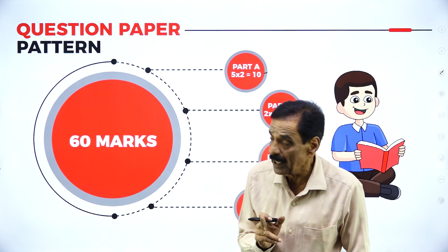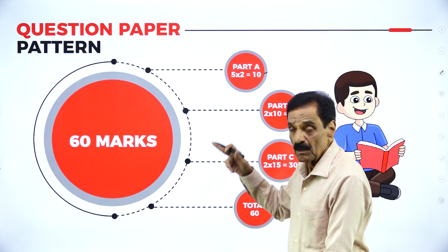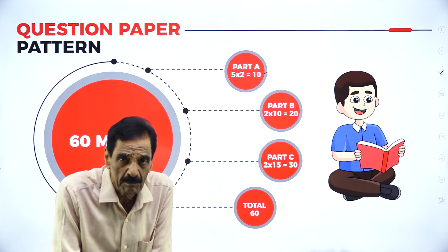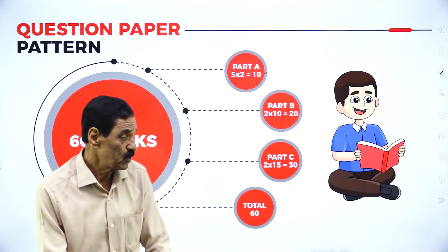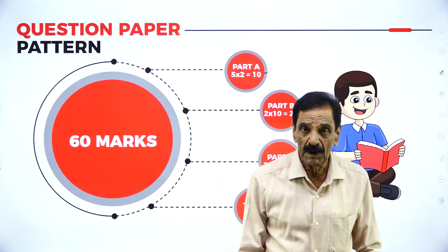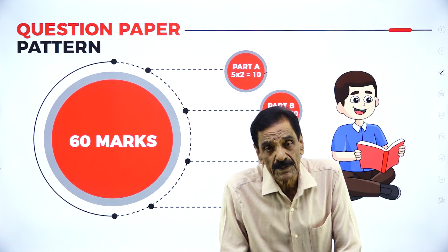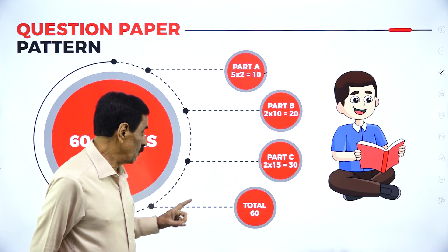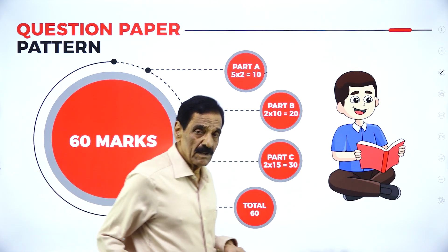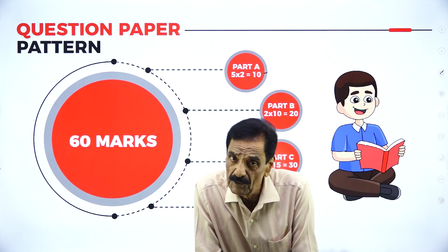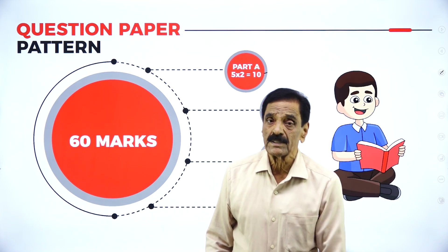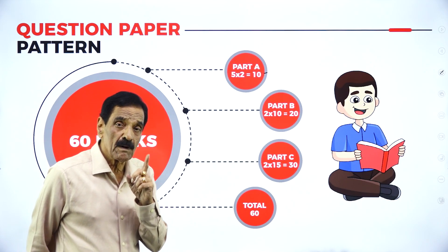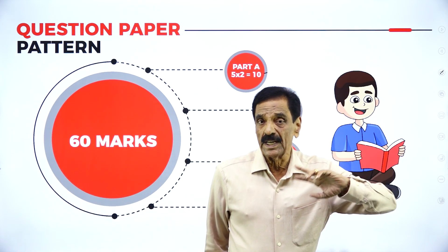Part A is only theory. Part B includes theory and problems. Part C has one theory and three problems — sometimes all problems with no theory. Totally 60 marks. To pass, you need 40 percent — that is a minimum of 24 marks out of 60. The balance can be made up through internal assessment. A minimum of 24 marks in the external exam is essential.